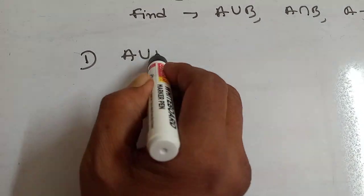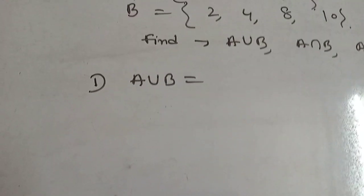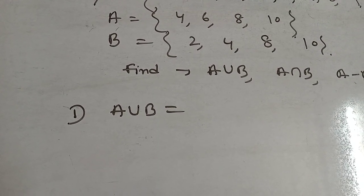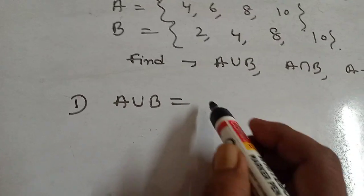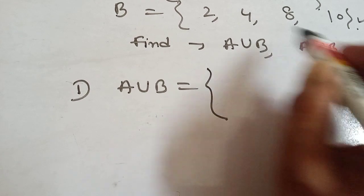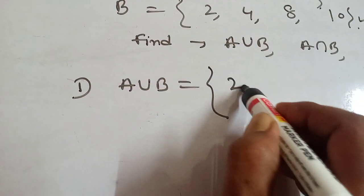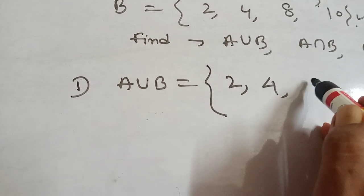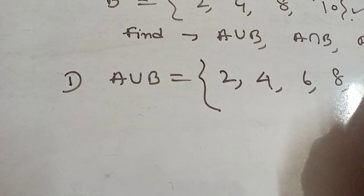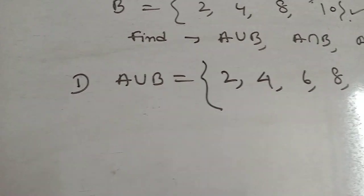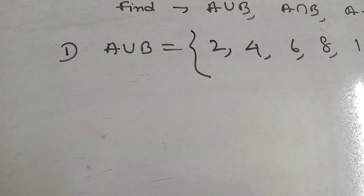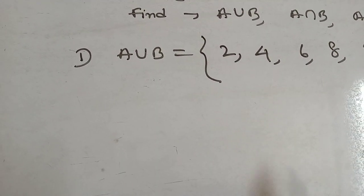First, A union B. A union B means common and uncommon both elements of sets A and B. So A union B = {2, 4, 6, 8, 10}. That is the answer.